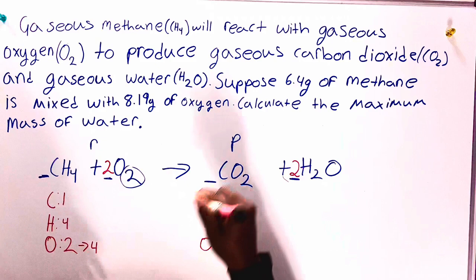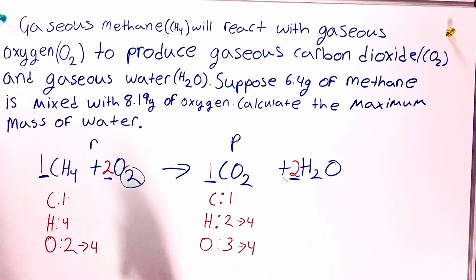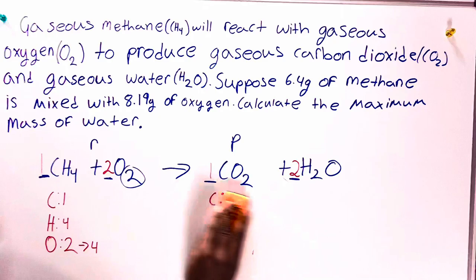Now, I need to change this to a four. If I have two here, two times blank gives us four. That is two here. Now, my equation is fully balanced. I would have one CH4 plus 2O2 to give me one CO2 plus 2H2O. Now, the equation is balanced. We can dive right into the problem.